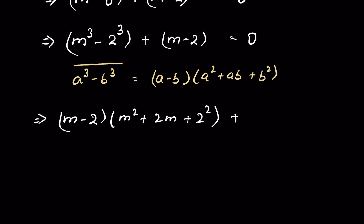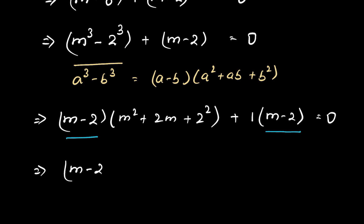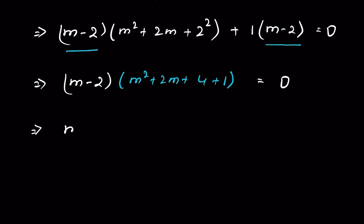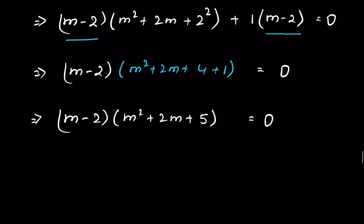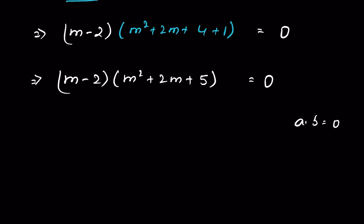Then plus m minus 2, which we can also write as 1 times (m minus 2), equals 0. Now (m minus 2) is a common factor, so we can factor it out. The remaining factors are m² plus 2m plus 4, plus 1, equals 0. So this becomes (m minus 2)(m² plus 2m plus 5) equals 0.